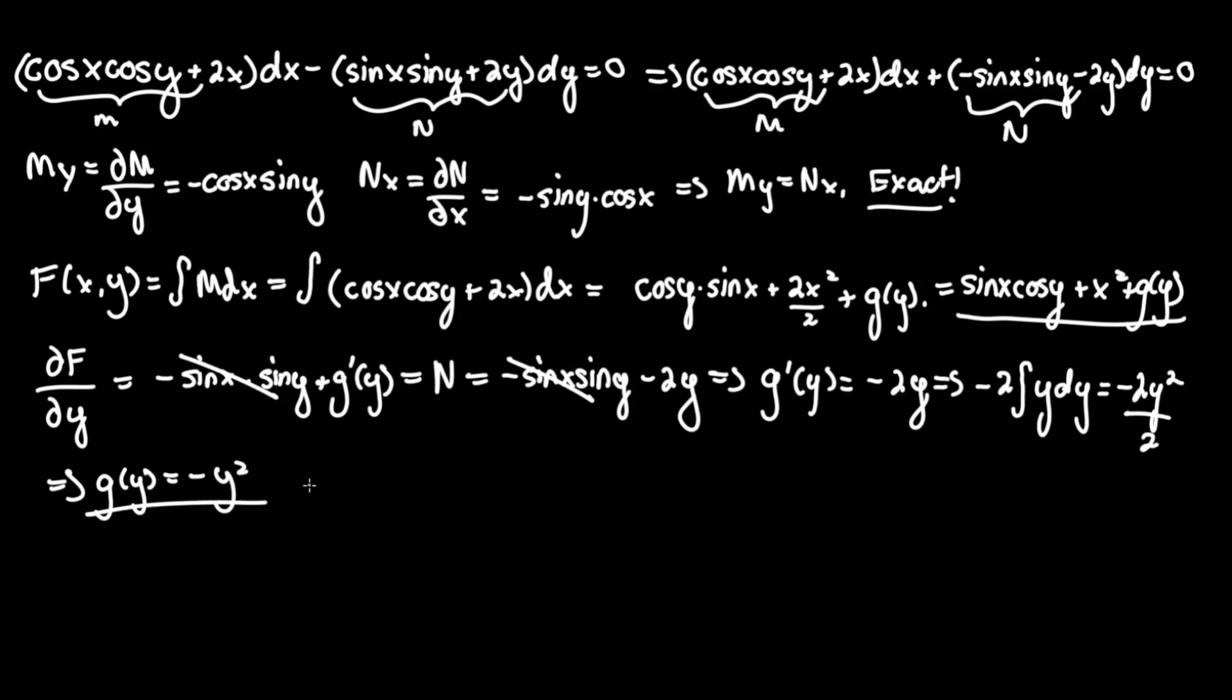So now we have all that we need to make the parent function F of x comma y, the general solution, equals what we wrote here: sine x cosine y plus x squared plus g of y, which we determined was negative y squared, so let's turn that plus into a minus: minus y squared equals some constant c.